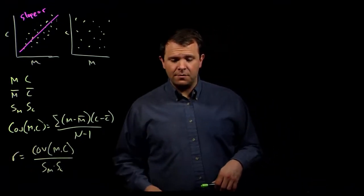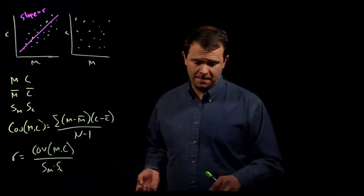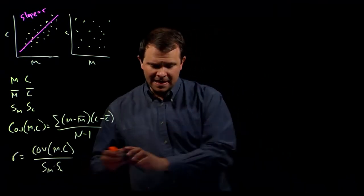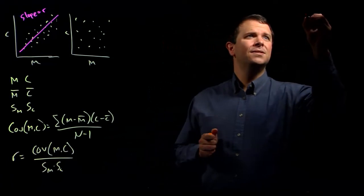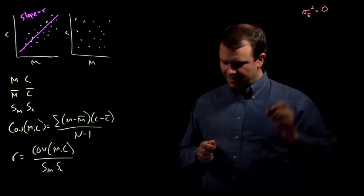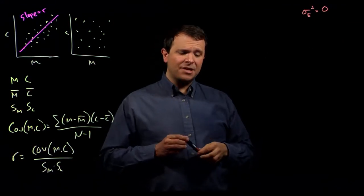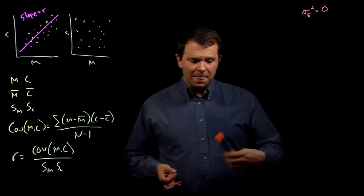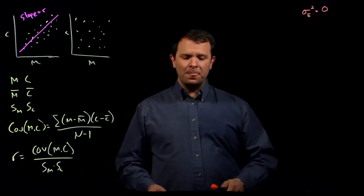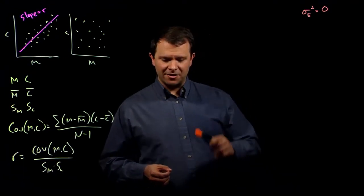Well, if we assume that there's no environmental variance, so sigma E squared is 0, that we can actually directly compute h squared, little h squared from R, based on the proportion of shared alleles.